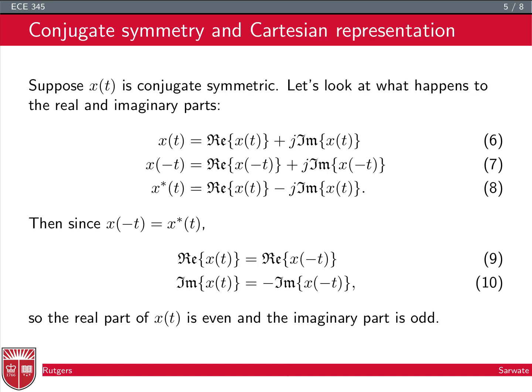Suppose x(t) is conjugate symmetric. Since x(t) is complex, it's hard to think about graphically. We have two decompositions: the Cartesian representation and the magnitude-phase representation. In Cartesian form, x(t) = Re{x(t)} + j·Im{x(t)}, x(−t) = Re{x(−t)} + j·Im{x(−t)}, and x*(t) = Re{x(t)} − j·Im{x(t)}.